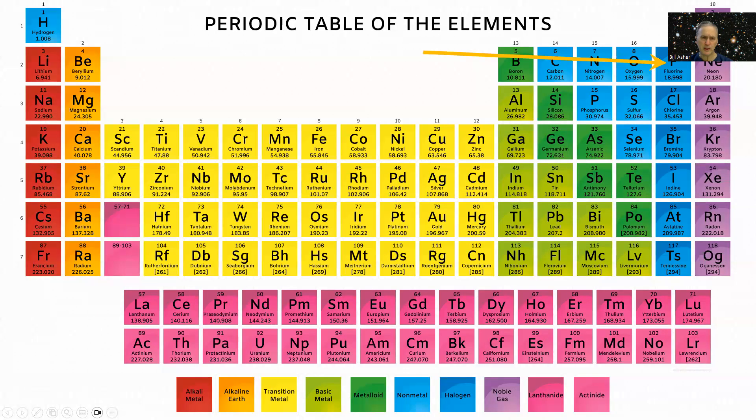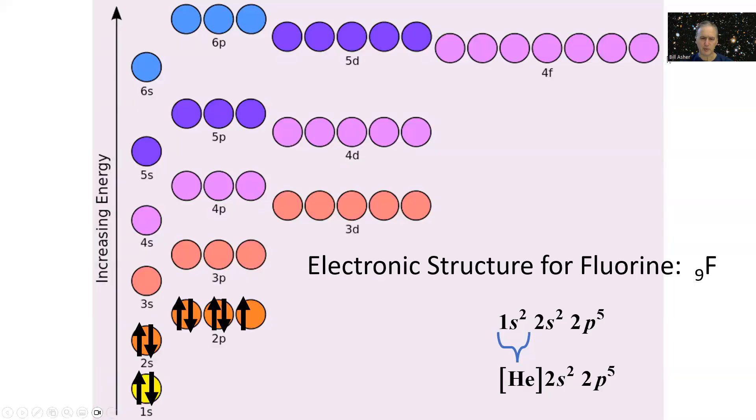Fluorine, same row, but it now has an atomic number of nine. So nine electrons. If we look at fluorine, it's got two, four, six, eight, nine.